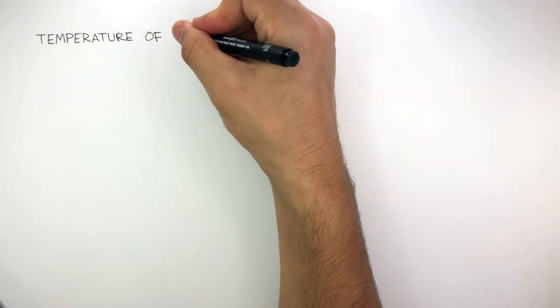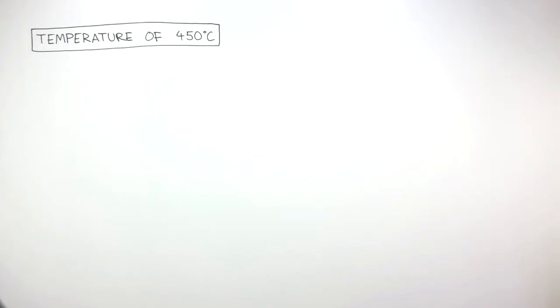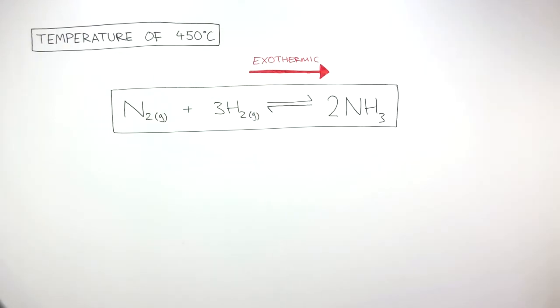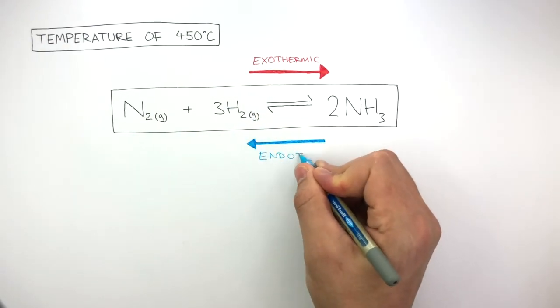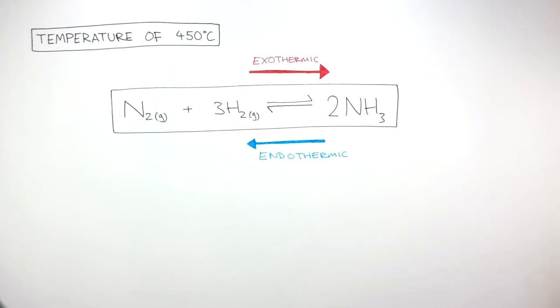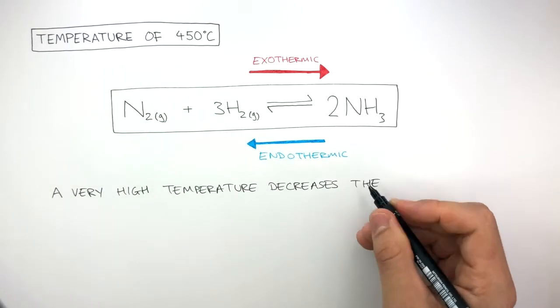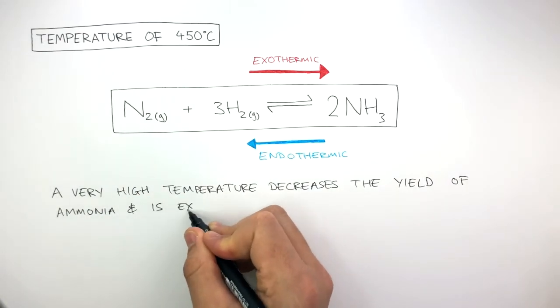Now we know a temperature of 450 degrees Celsius is used. To understand why, we need to look at the balanced symbol equation, where the forward reaction is exothermic and the backward reaction is endothermic. This means a very high temperature decreases the yield of ammonia and is expensive.